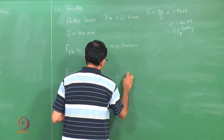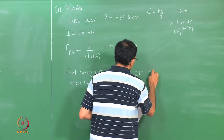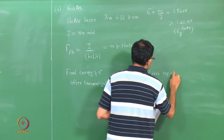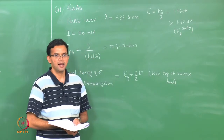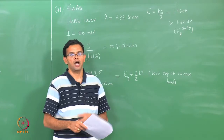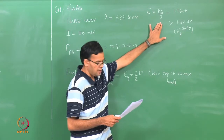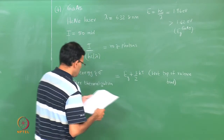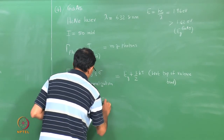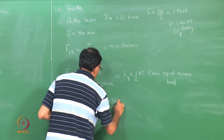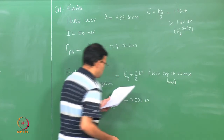The excess energy that electrons and holes possess is lost to the lattice; the electron comes close to the conduction band edge and the hole close to the valence band edge. The final energy of the electron after thermalization, with respect to the top of the valence band, is E_g + (3/2)kT. So the energy lost per carrier is Δe = hc/λ − [E_g + (3/2)kT], which works out to 0.503 electron volts.